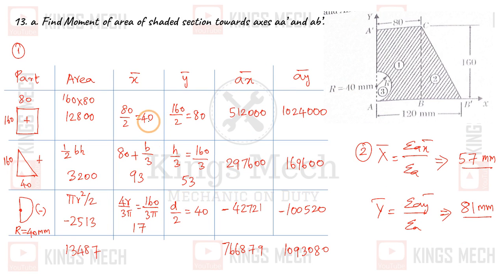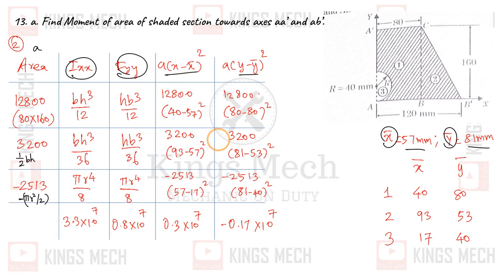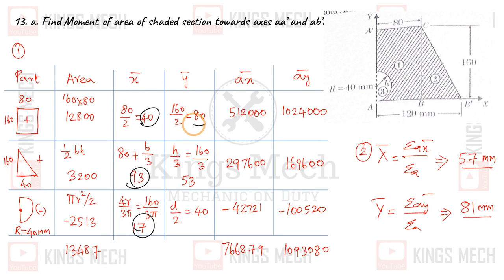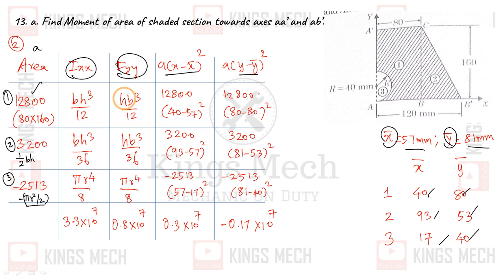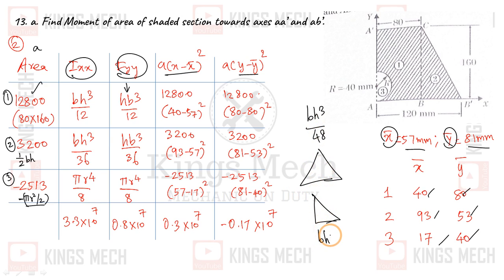We already have x̄ = 57 mm and ȳ = 81 mm. The individual distance values are: 40, 93, 17 for the x-direction (x − x̄), and 80, 53, 40 for the y-direction (y − ȳ). The section areas are: rectangle = B×H, triangle = ½×B×H, circle = π×R²/2 (semicircle). The self-moment of inertia formulas are: rectangle IXX = BH³/12, IYY = HB³/12; triangle IXX = BH³/36; semicircle IXX = πR⁴/8.